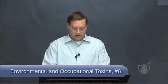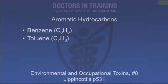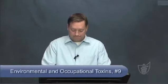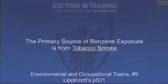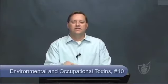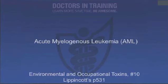Moving on to aromatic hydrocarbons — specifically benzene, chemical structure C6H6. It's used predominantly as a solvent and found in crude oil and gasoline. It's been limited to 1% in gas due to toxic effects. The number one source of benzene exposure today is tobacco smoke. The key thing to know: benzene affects your bone marrow and can cause leukemia — specifically AML, acute myelogenous leukemia. Remember that for tests.